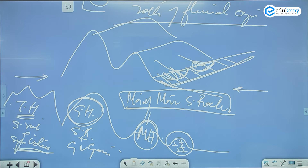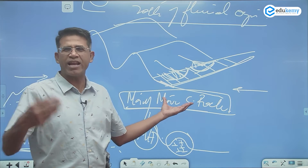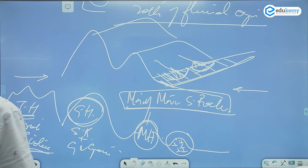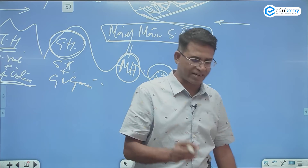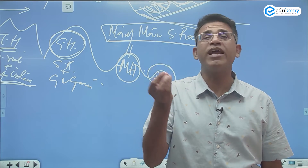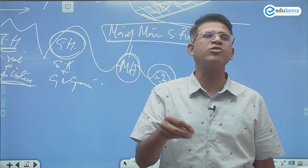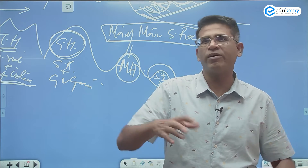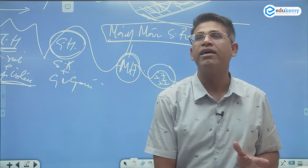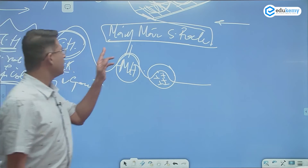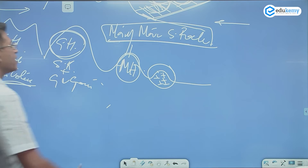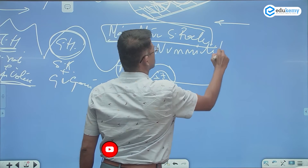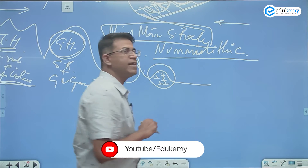The Middle Himalayas have mainly marine sedimentary rocks. Does anybody know the name of these rocks? I'm adding some extra information — if you can know and write it, it only adds an edge to your answer. The marine sedimentary rocks of the Middle Himalayas are mainly called nummulithic rocks — N-U-M-M-U-L-I-T-H-I-C.